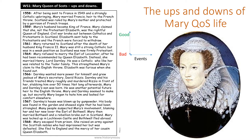Marrying Darnley makes Elizabeth very angry, as together they now have a significant link to the English throne. By 1566, Darnley wants more power. He's very abusive towards Mary and kills David Rizzio, one of Mary's closest friends and her secretary. Shortly after, Mary has their child James, who becomes James VI of Scotland and later James I of England after Elizabeth dies. Although this male heir makes them more of a threat since Elizabeth doesn't have an heir, Mary hates her husband.